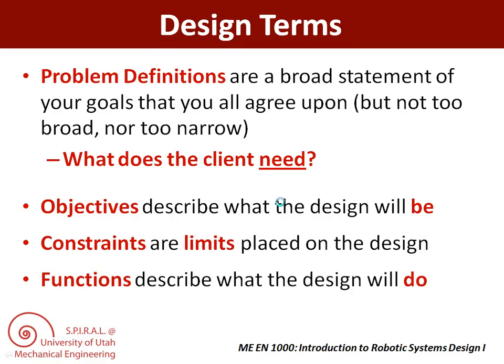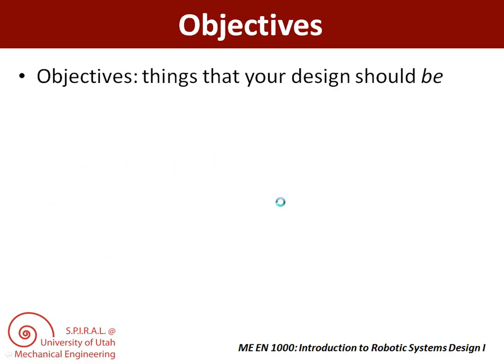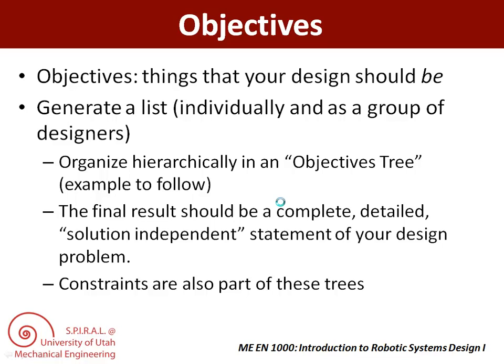These are really important definitions to know, so we will look at each in more detail. Objectives are things your design should be — that makes them adjectives. First you generate a list, and then you organize these into an objectives tree. In order to later get the best design solution, you want to be independent of solutions. For instance, if your problem statement involves getting to Mars, you don't want to have an objective that is 'be a rocket' — now you've ruled out UFOs and teleportation. Making sure you stick to adjectives will help you avoid this.